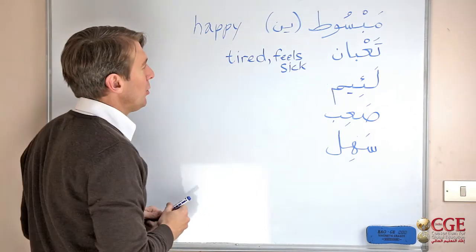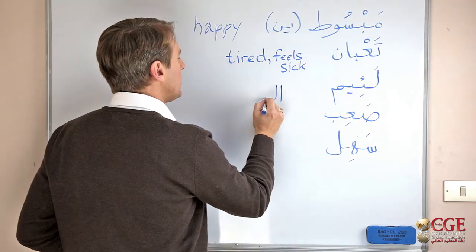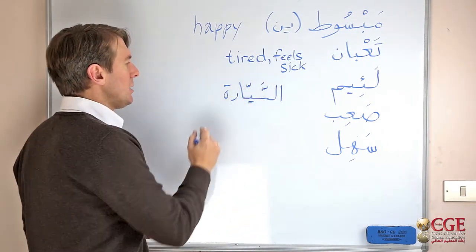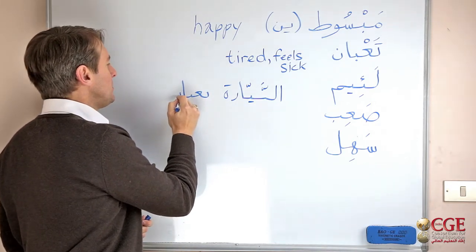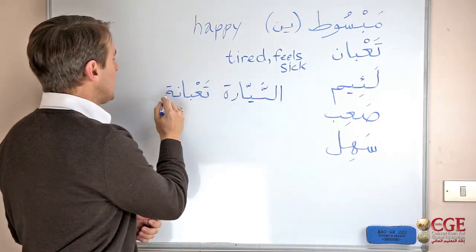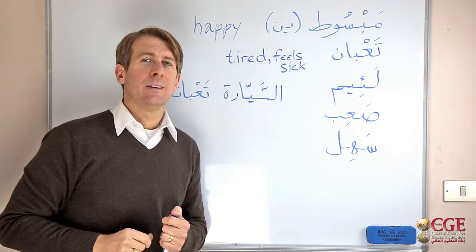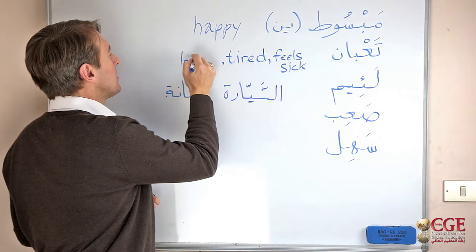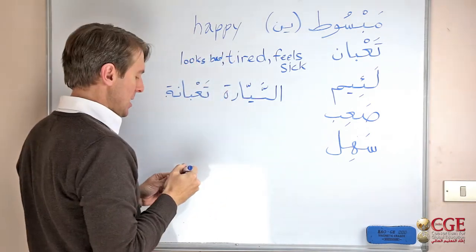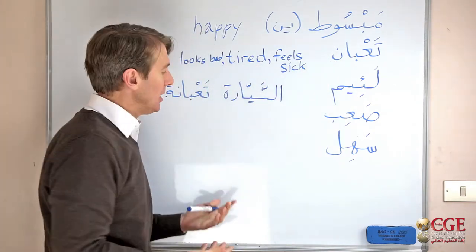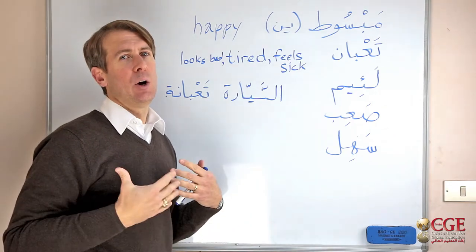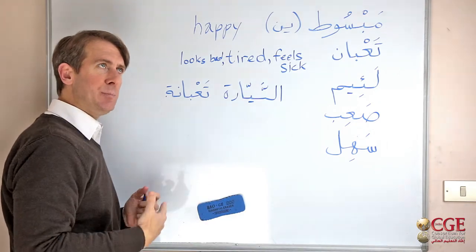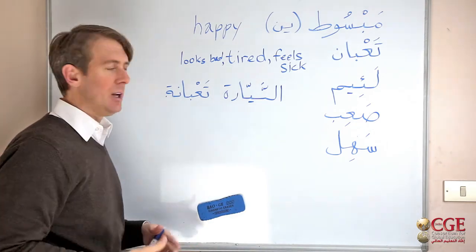Ta'ban is also used for things. For example, if you have a car — say Sayara — you would say Sayara Tab'ana, meaning the car is in terrible shape, it looks bad, it needs to be fixed. So Ta'ban for things basically means it looks bad or it's in bad shape. You could say 'Sayara Tab'ana' — this car is beat up, it's not looking good.